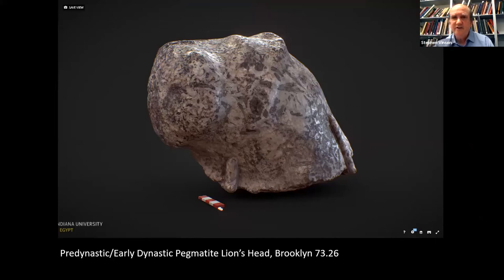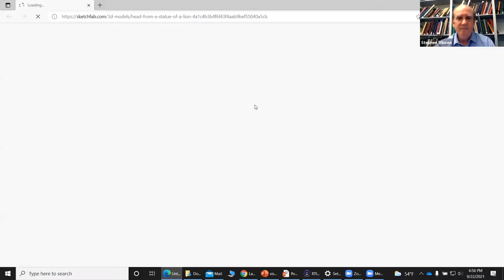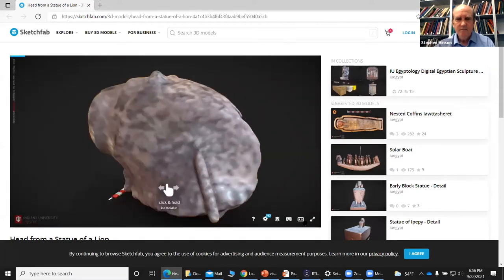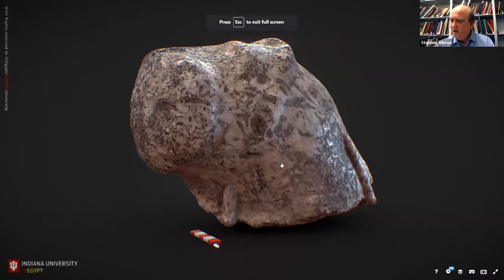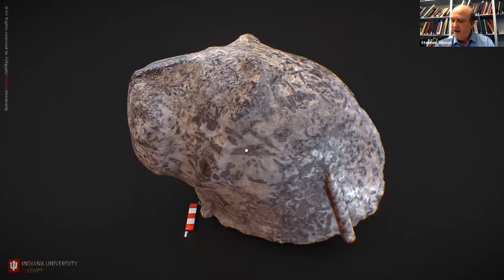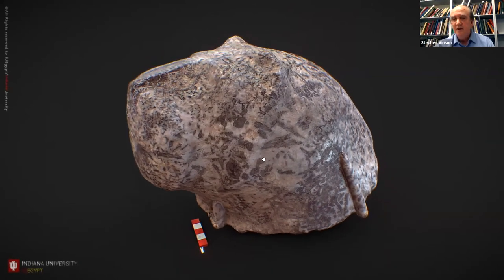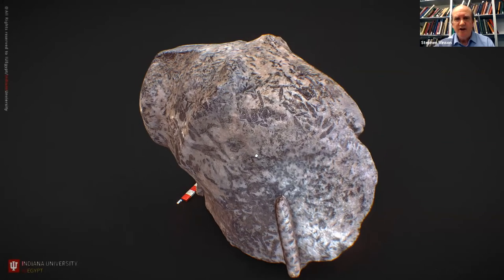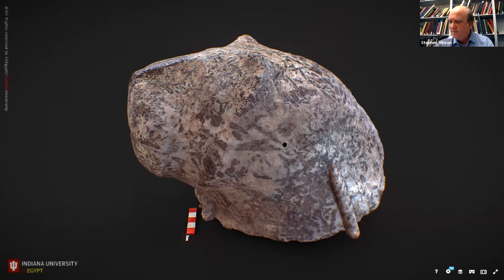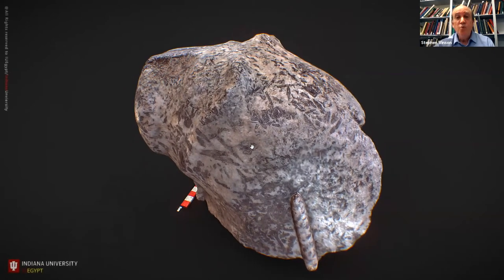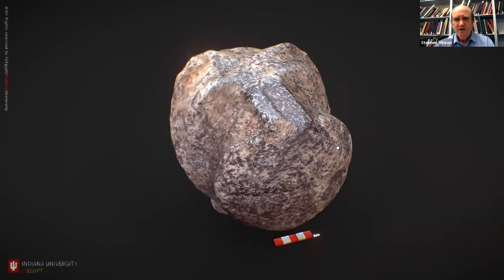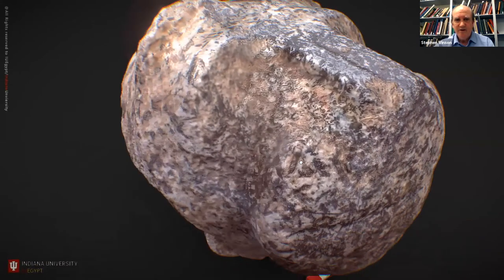The first one I'd like to show you is this granite lion from the Brooklyn Museum. This is a model said to belong to the late pre-dynastic or early dynastic period — somewhere between 3,300 and 3,000 BC. It's carved from pegmatite, which according to Wikipedia is chemically identical to granite but has a somewhat rougher texture. Rough stone like this makes a really great model — it's not over-reflective and the texture makes it easy for the camera to focus. We get nice details here of the nose, the mouth, and the eyes.